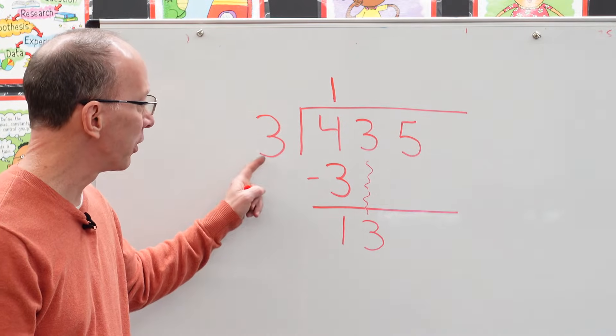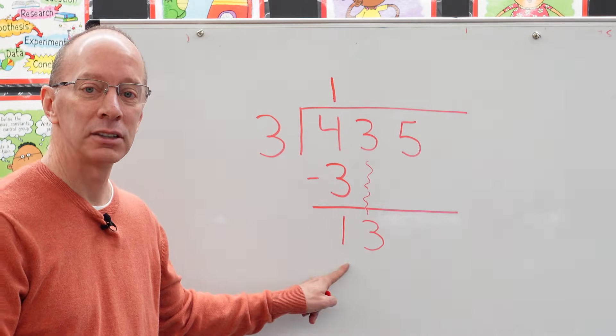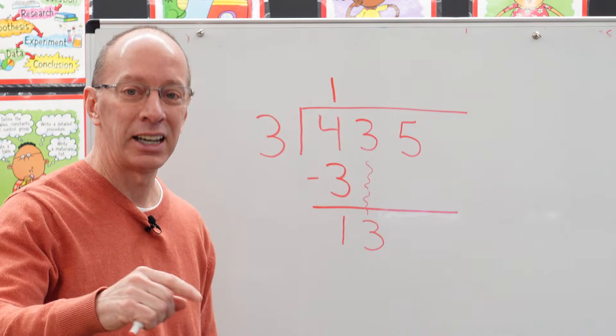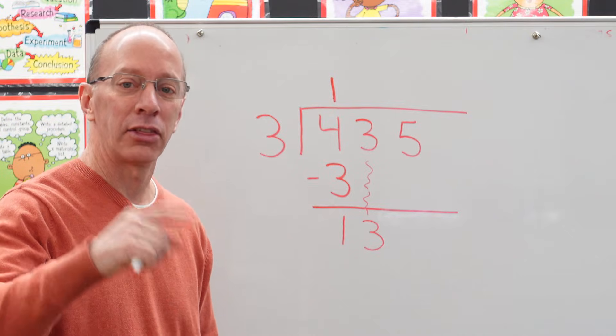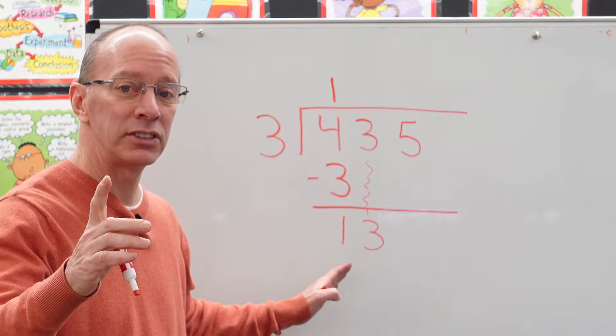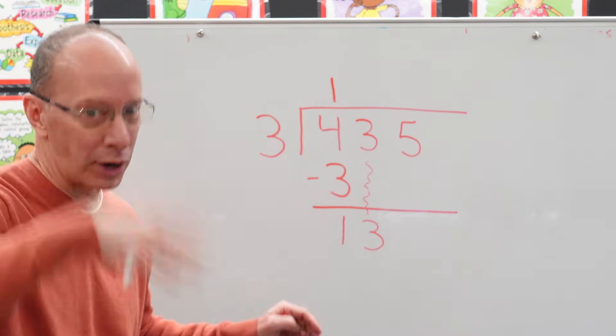So now how many times can I put three into 13? Let's try it. Three times one is three. Three times two is six. Three times three is nine. Three times four is 12. And three times five is 15. Whoa! Too big. Drop it down.